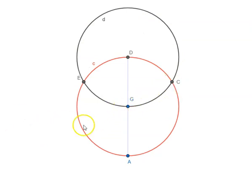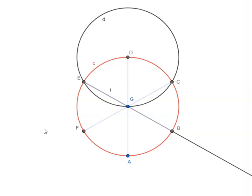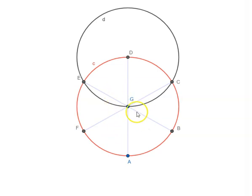Join GC and extend it so that it intersects the circle on the other side. Similarly, E and G — take the intersections F and B. Now let us get rid of these two lines. We have to prove that if we join all these points, we will get a regular hexagon. Let us first prove all these angles are equal.